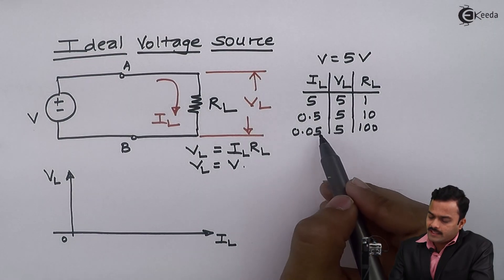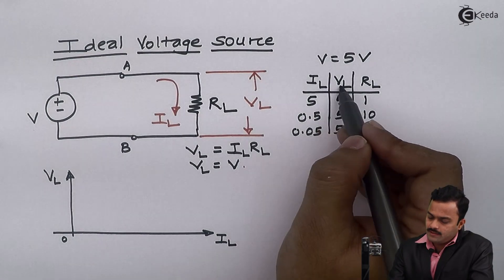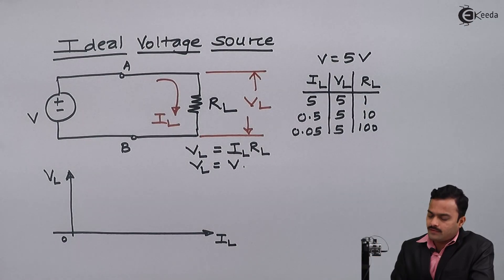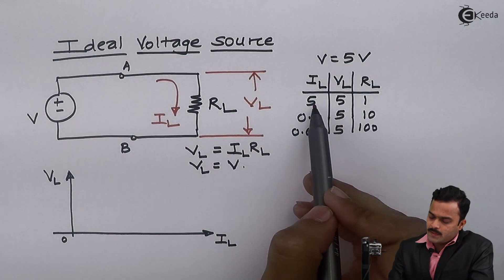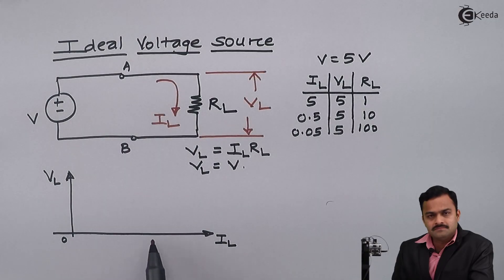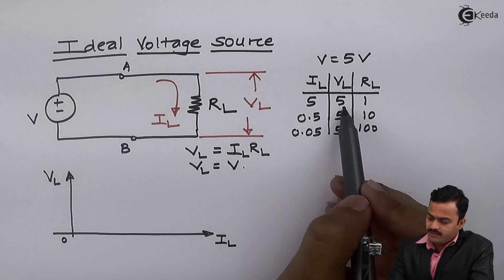If I want to plot the graph showing VL and IL, I'll get a graph like this - irrespective of any value of IL, I'll get VL fixed at 5 volt.